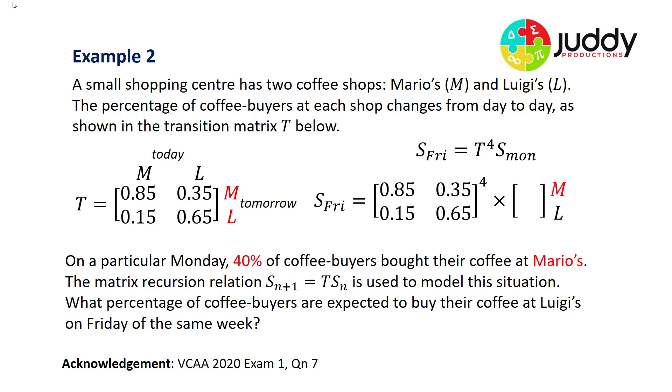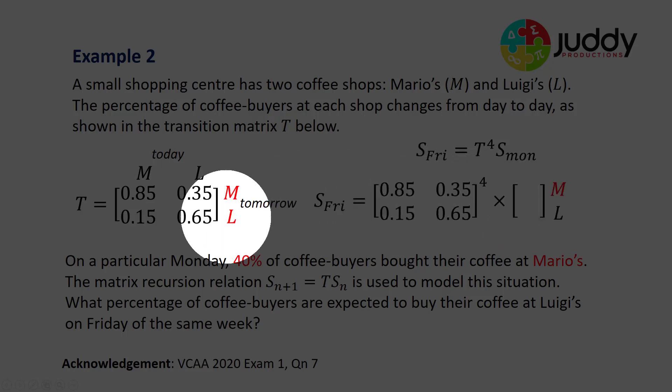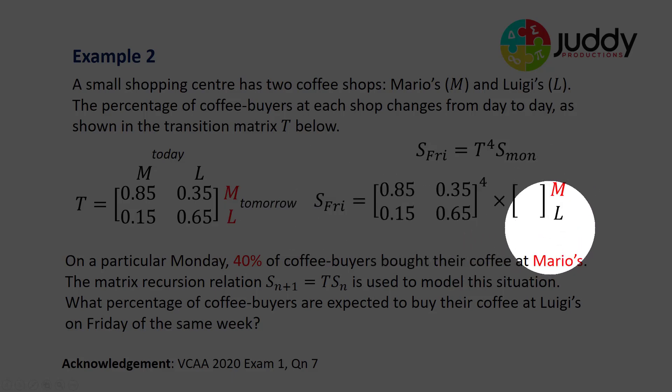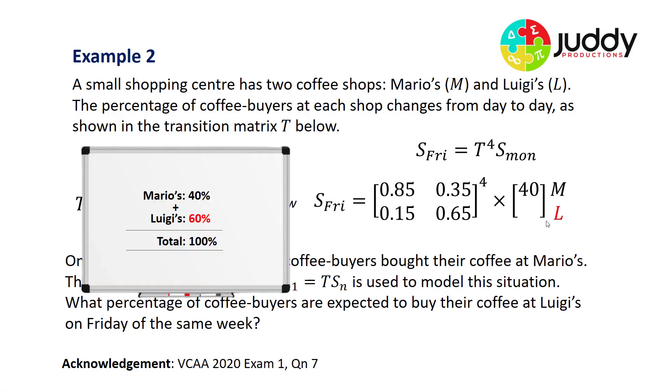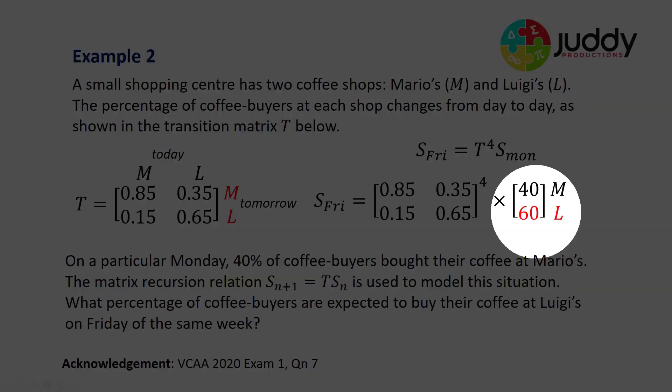We substitute in our Monday state matrix. Much like our transition matrix, Mario's is on the top, Luigi's on the bottom. 40% of people buy their coffee on Monday at Mario's. Now clearly, if 40% are buying from Mario's, there must be the remaining 60% to make up the 100% of coffee drinkers at Luigi's. So our state matrix for Monday is 40% of people at Mario's and 60% at Luigi's.